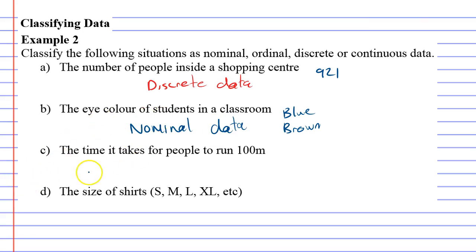Okay. Then the time it takes for people to run 100 meters. So that could be 13.2 seconds. But this decimal can become more and more accurate with more accurate measuring devices. So it really could have been 13.20109 seconds. And this decimal can go on forever. And we spoke about that being continuous data, continuous meaning forever.